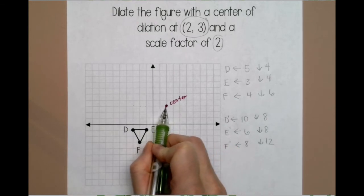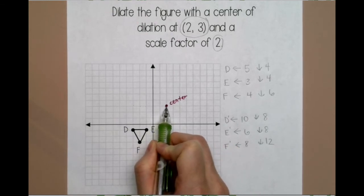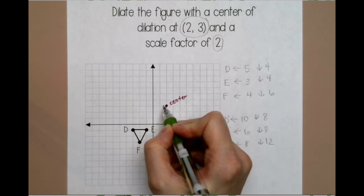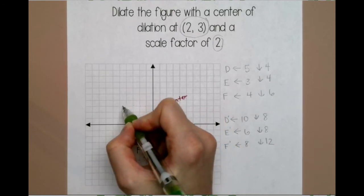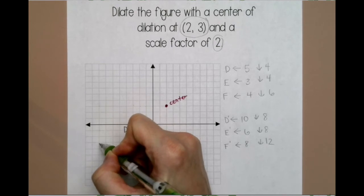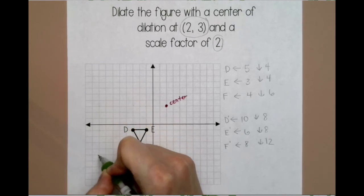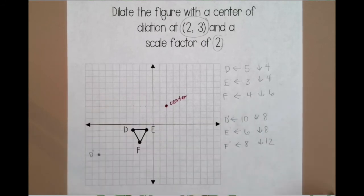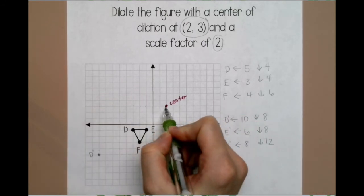Alright, so I'm going to go back to my center. This is important. Always count from your center. Do not count from these points. Count from your center. I'm going to go left 10, and down 8. Alright, same thing for E prime, I'm going to go left 6, and down 8.